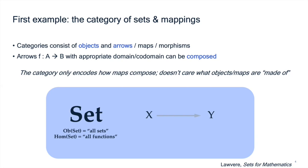I'll redo a couple of introductory things from Monday. Categories consist of objects — think of those as abstract things that we can map between. The mappings are called arrows, maps, or morphisms. A key property is that we can compose these arrows whenever one arrow points to a thing and the other points from that thing. A key idea behind category theory is we don't look into sets or objects or into how functions work on elements, but we just care about the compositional structure of how arrows compose.